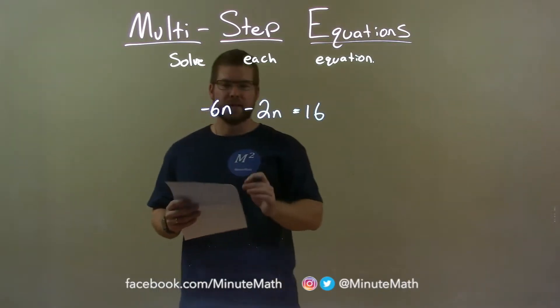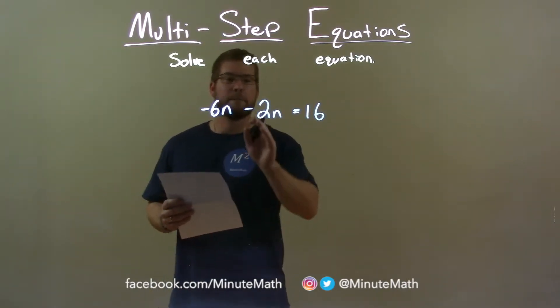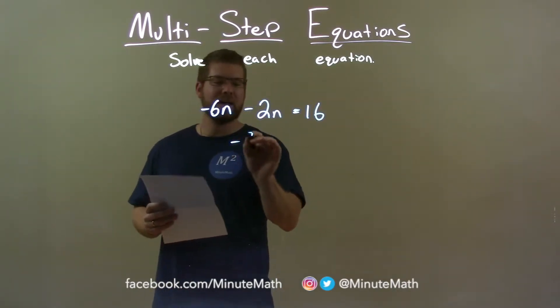First thing I want to do is combine my like terms. Negative 6n minus 2n comes out to be negative 8n.